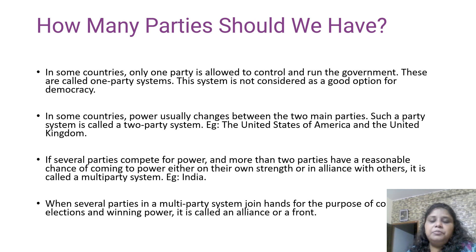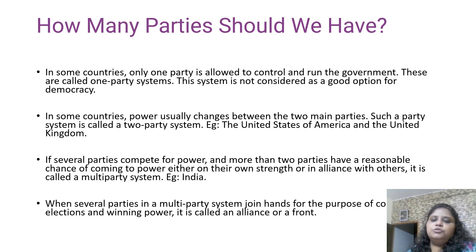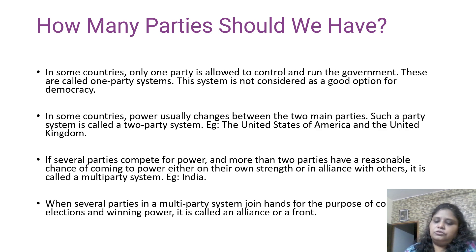Where several parties compete for power and more than two parties have a reasonable chance of coming to power — either on their own strength or in alliance with others — it is called the multi-party system. The example is India. When several parties in a multi-party system join hands for the purpose of contesting elections and winning power, it is called an alliance or a front.